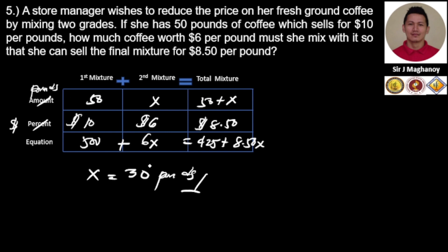So here: 30 times 6 is 180, plus 500 equals 680 on this side. On the other side: 80 times 8.50 is 680, the same. So we can say that our answer, 30 pounds of $6 coffee, is correct. Let's move to our next supplementary problem.